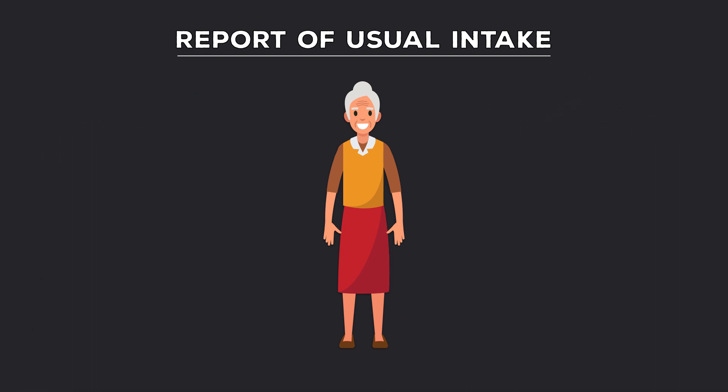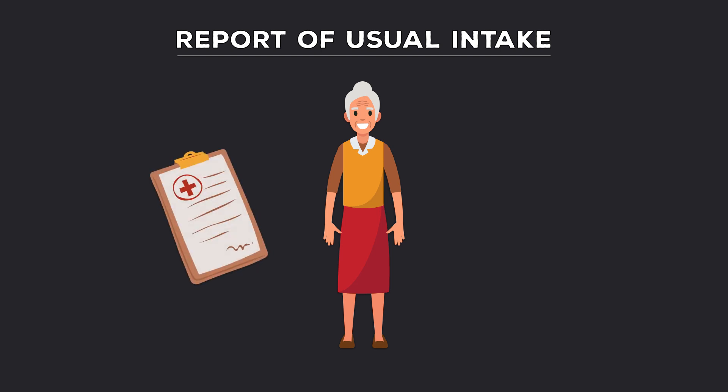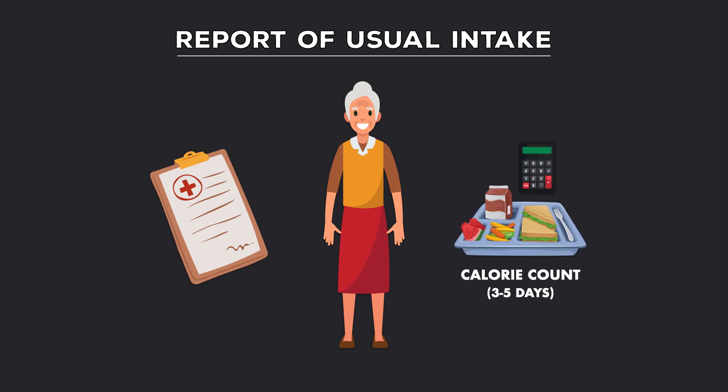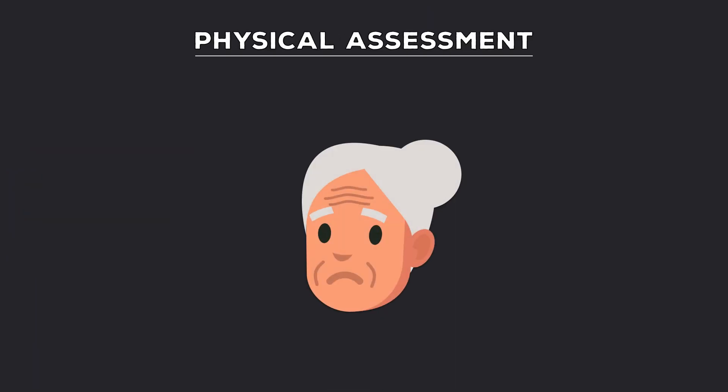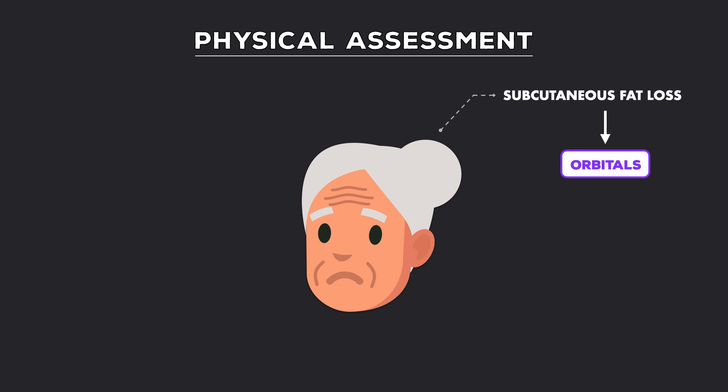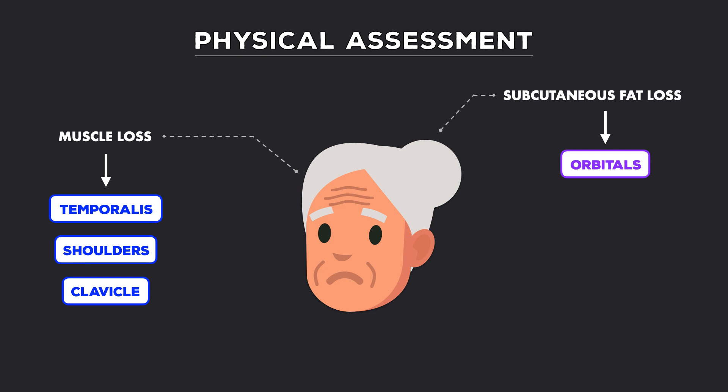If the inadequate energy intake wasn't so obvious, other strategies could include a more detailed account of the patient's usual intake with specific food selections and portion sizes, or a formal calorie count of the meals served in the hospital for the next three to five days. The second key data point came from the physical assessment, where you saw subcutaneous fat loss to the orbitals and muscle loss to the temporalis, shoulders, and clavicle.